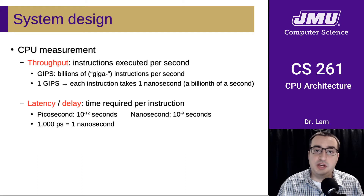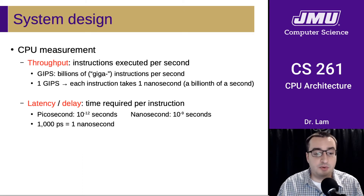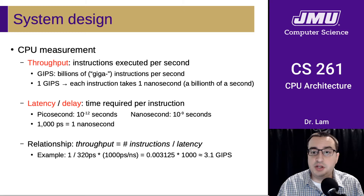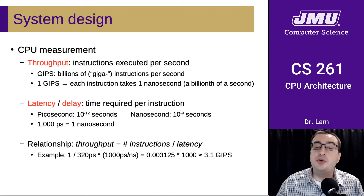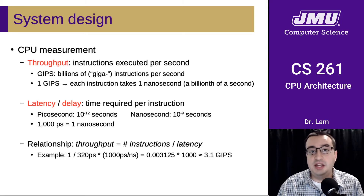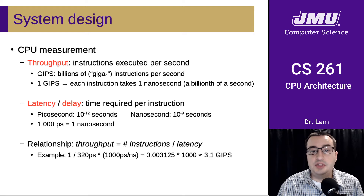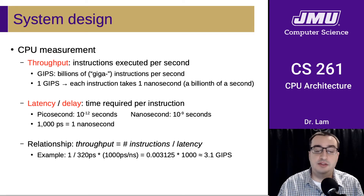We generally measure these things in prefixes because the units are so small. There's a relationship between the throughput and the latency of a CPU: the throughput is the total number of instructions divided by the latency of each instruction. In some sense, these are inverses of each other — generally, the higher the throughput, the lower the latency needs to be.